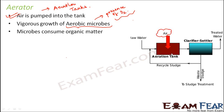This is the aeration tank. Air is pumped into it, and in the presence of air the microorganisms can grow and proliferate. These microorganisms then start consuming the organic matter, so the organic impurity keeps on decreasing. This is a very important step in the process of sewage treatment.